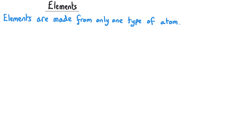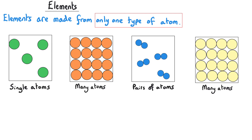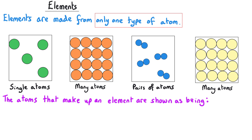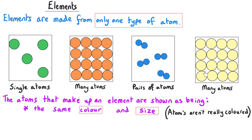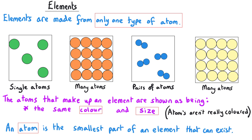Elements are the name for a type of substance that is only made up of one type of atom. This might be single atoms by themselves, or it might be something larger made from lots of atoms. But what all elements have in common is that each element is only made from one type of atom, as you can see from these pictures here. And the atom is the smallest part of an element that can exist.